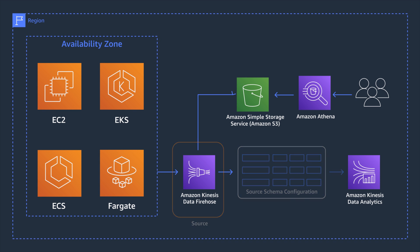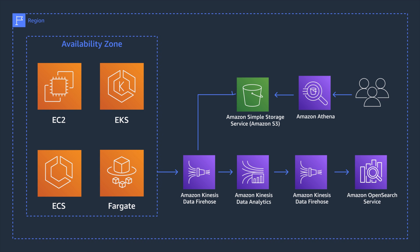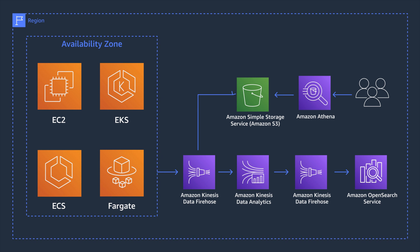We then set the destination as a second Kinesis Data Firehose delivery stream. Data Firehose supports Amazon OpenSearch as a destination, so it's the simplest way to get your data into an OpenSearch domain. I've seen customers use Kafka for their delivery stream because it's open source and has been used for a number of years. You can certainly use Kafka, but many find it cumbersome to manage their own Kafka servers. If you want AWS to handle that heavy lifting, I'd recommend using Amazon Managed Streaming for Kafka for your delivery stream.